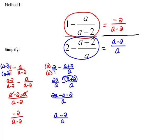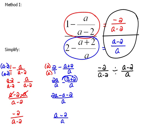Now, by doing that, we have created a single fraction over a single fraction. So if I were going to write this out as using division instead of the fraction bar, this would be negative two over a minus two divided by a minus two over a. And remember, we never divide fractions. Instead, we flip the second one and change it to a multiplication. So this would be times a over a minus two.